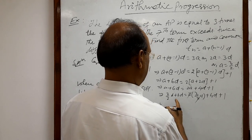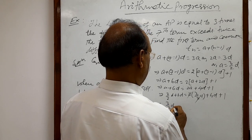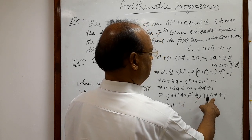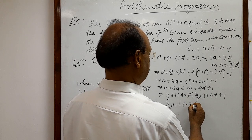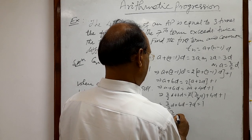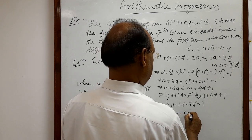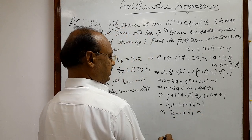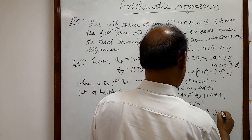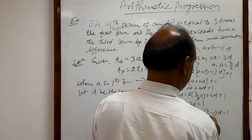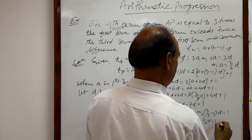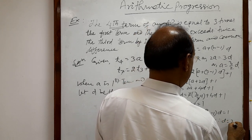So we get (3/2)d + 6d on the left and 3d + 4d on the right. Simplifying, (3/2)d + 6d − 3d − 4d = 1, which gives (3/2 − 1)d = 1, so (1/2)d = 1, therefore d = 2.